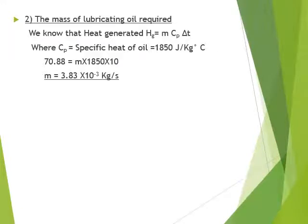The mass of lubricating oil required is found from Hg = M × CP × ΔT. We know CP, Hg, and ΔT, so mass M of lubricating oil required = 3.83 × 10⁻³ kg/s. That completes Problem 3.